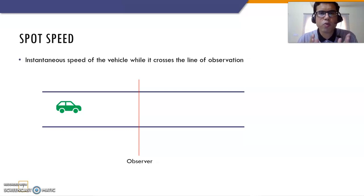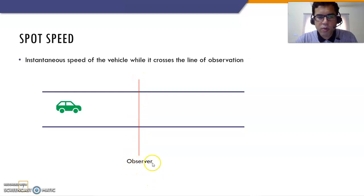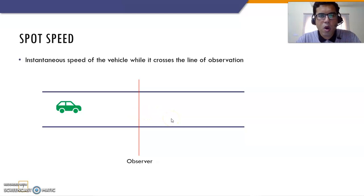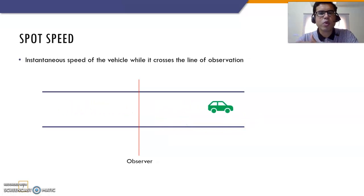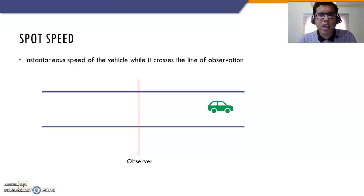First we will talk about spot speed. So what is a spot speed? Assume that this is a road and the observer is standing on the road. The observer is standing over here and this is the line of observation. The observer is looking at the vehicle, whichever is crossing this particular line. What the observer is trying to observe is the instantaneous speed of the vehicle. When the vehicle crossed, the observer notices the instantaneous speed of the vehicle when it was just crossing the line. That is called spot speed.